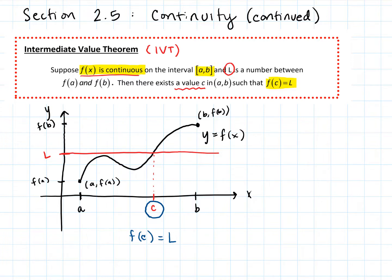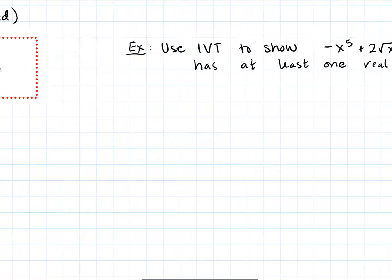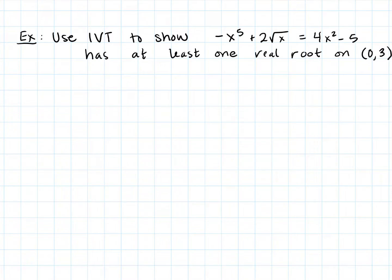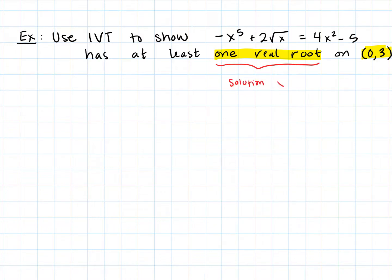That's what the Intermediate Value Theorem says, and we now have a graph. So how do we use the IVT? We could use it for an example like this: suppose we have the equation negative x to the fifth plus 2 square root of x equals 4x squared minus 5, and we want to show that it has at least one real root on the open interval from 0 to 3. To have a root means there is a solution in that interval — we're trying to show there's at least one solution.